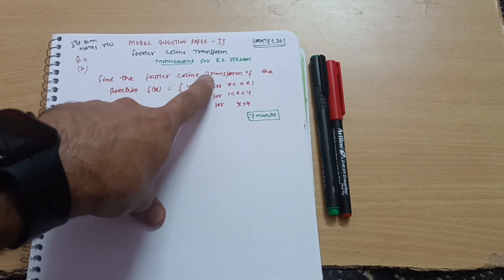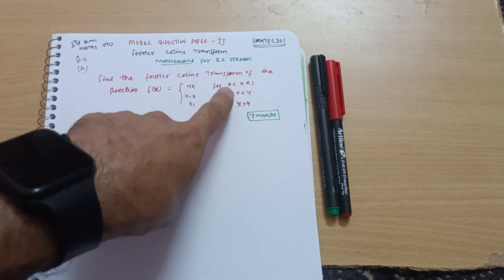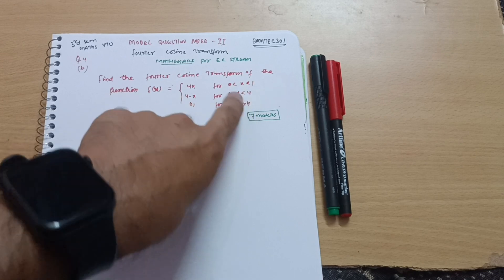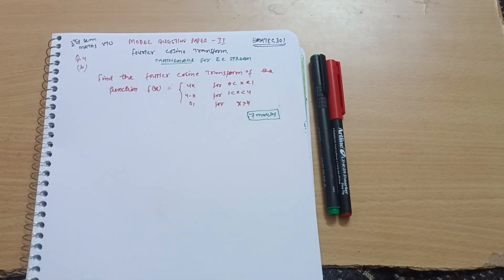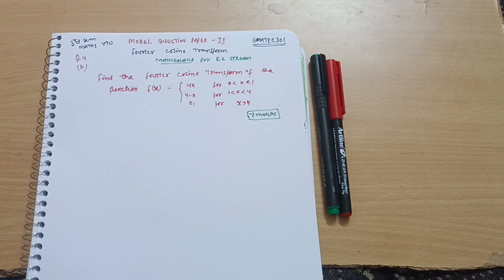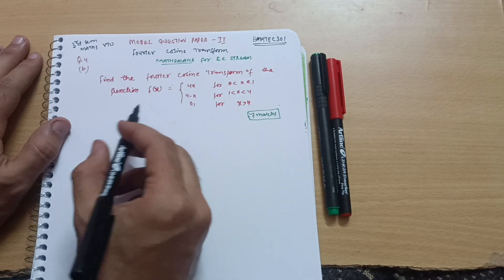We need to find the Fourier cosine transform of the following function: f(x) = 4x for 0 < x < 1, f(x) = 4 − x for 1 < x < 4, and f(x) = 0 for x > 4. I am again and again emphasizing that you should practice more and more on these types of problems — they are formula-based, so you can easily solve them. Only by practicing can you score well in mathematics.